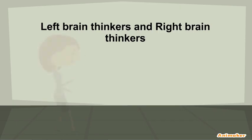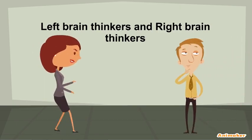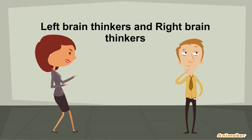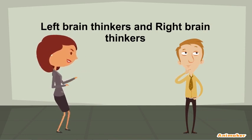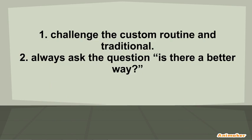Left brain thinkers and right brain thinkers. Left brain thinkers are more systematic, proceeding in a highly logical fashion. Right brain thinkers are more unsystematic and they are the ones who are the heart of the creative process.